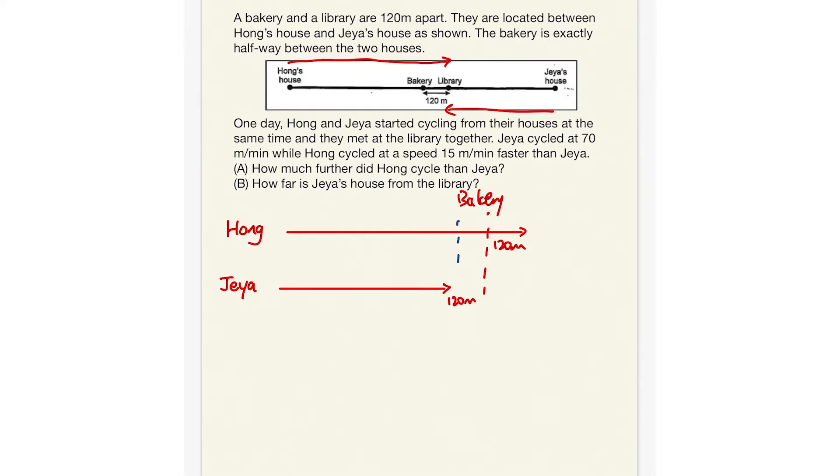So from here, we should be able to see something already. Now, what's the thing that we see? Part A, where they said, how much further did Hong cycle as compared to Jaya? Okay, you can see here, we have the 120 meters. We have another 120 meters. 120 plus 120 equals to 240 meters.